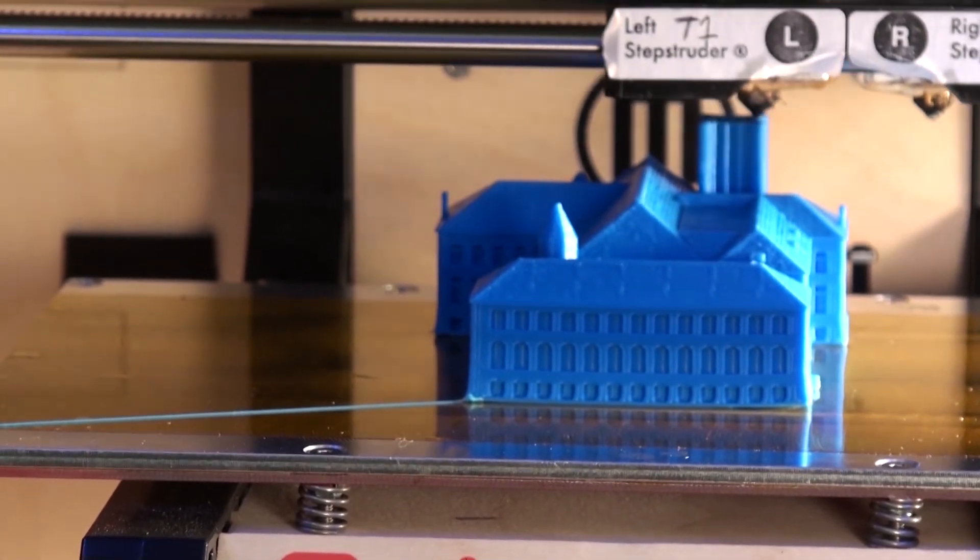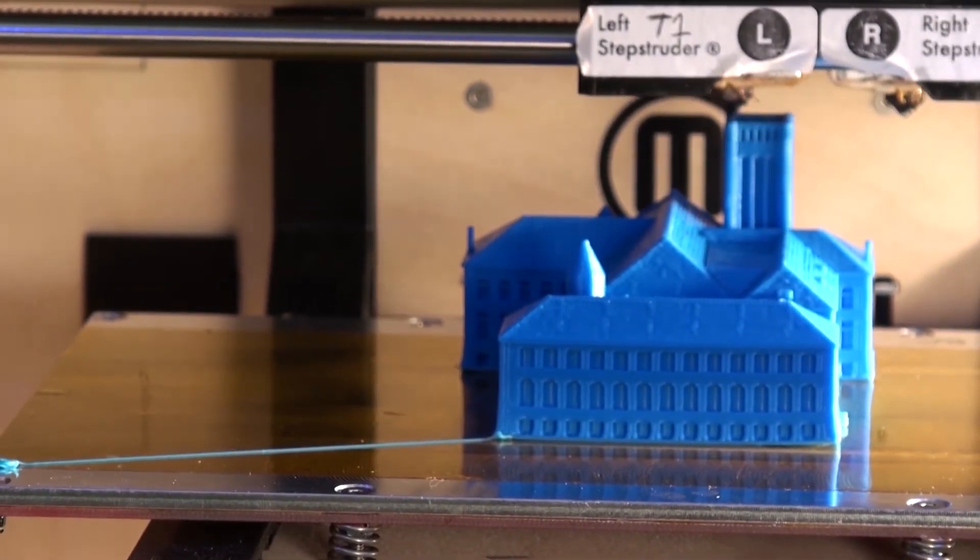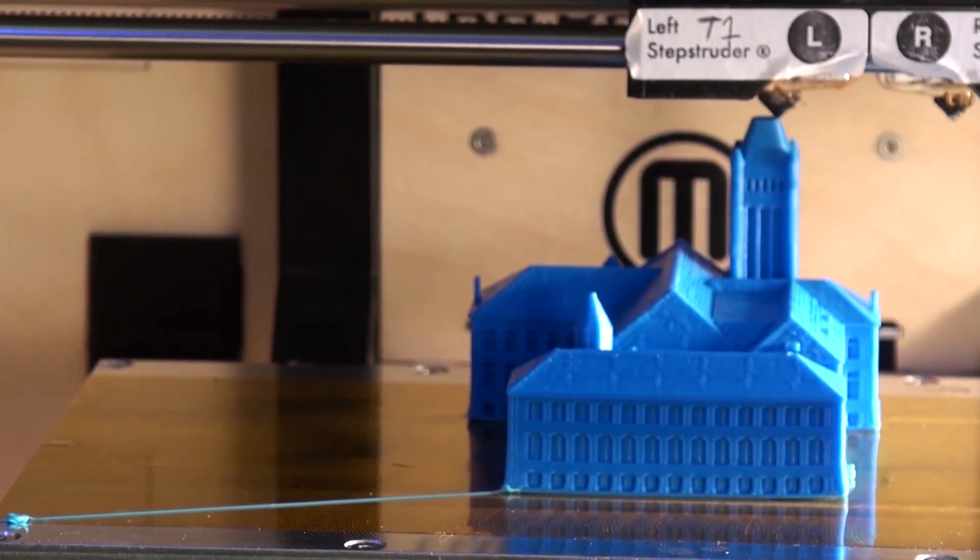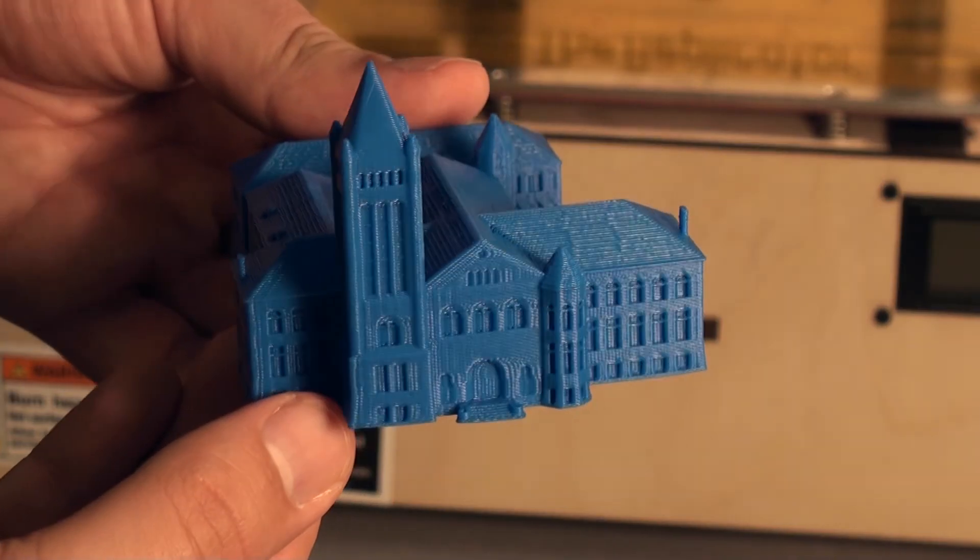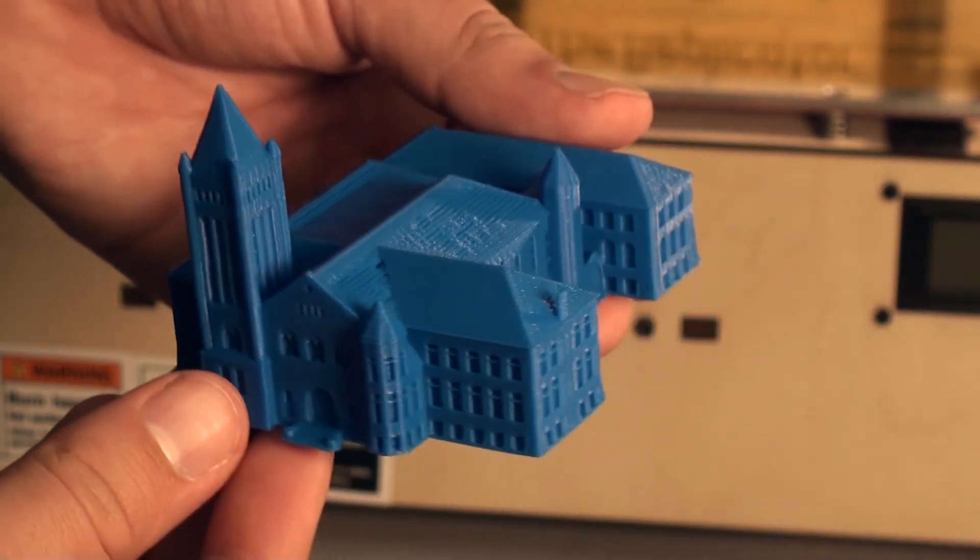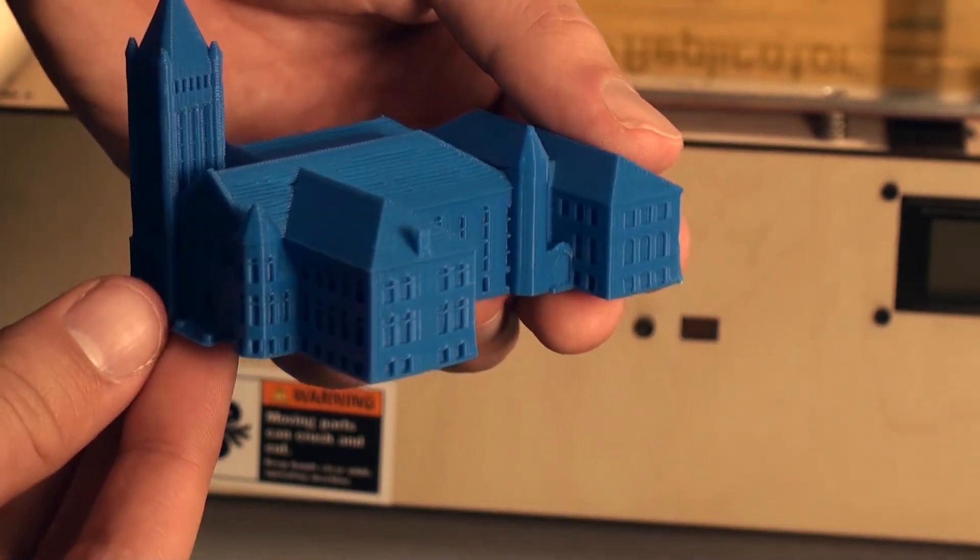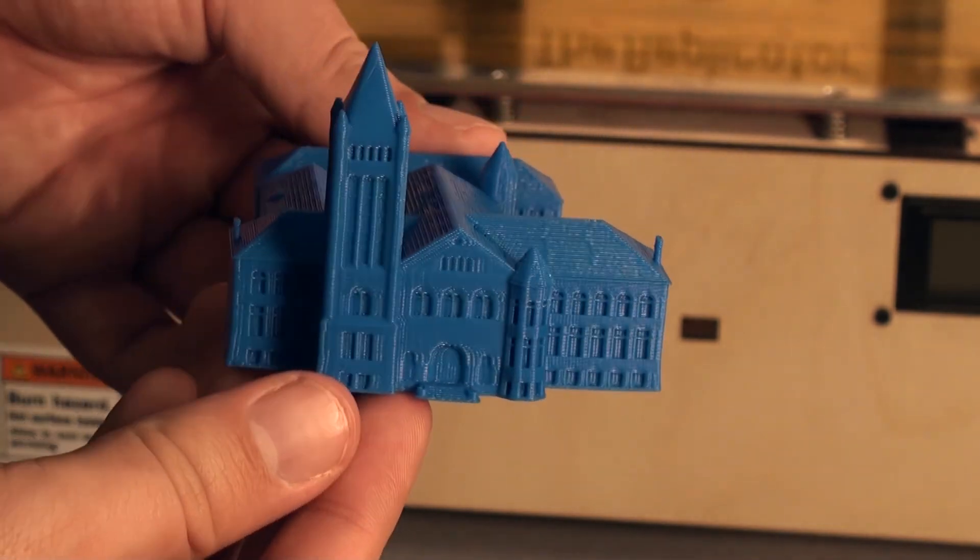Once we've made these models and have the STL files, we print them out using the 3D printer. It's a way for us to create models and give people a physical interaction with math in a way they wouldn't have before. They can actually physically touch the research that we're doing.